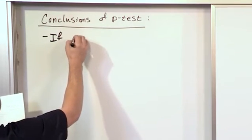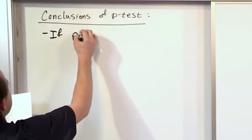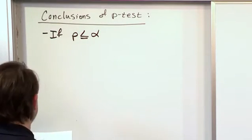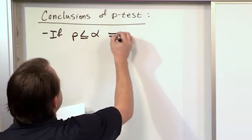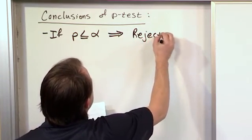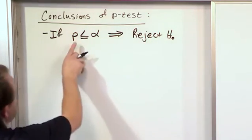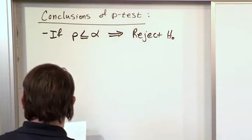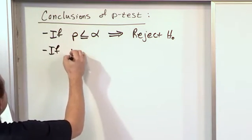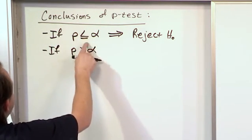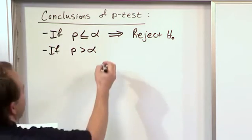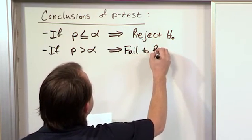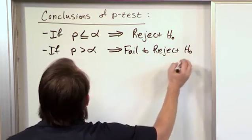If the p-value, which we call p, is less than or equal to alpha — this is the level of significance that we have in every one of these hypothesis tests — then you reject the null hypothesis. Very simple. If the p-value that you get is less than or equal to the level of significance alpha, then you reject the null hypothesis. If the p-value is greater than alpha — and it has to be greater, since the only other choice is that it would be greater — then you fail to reject the null hypothesis.